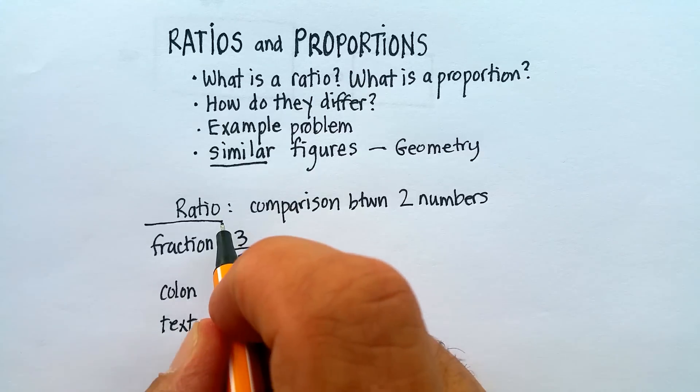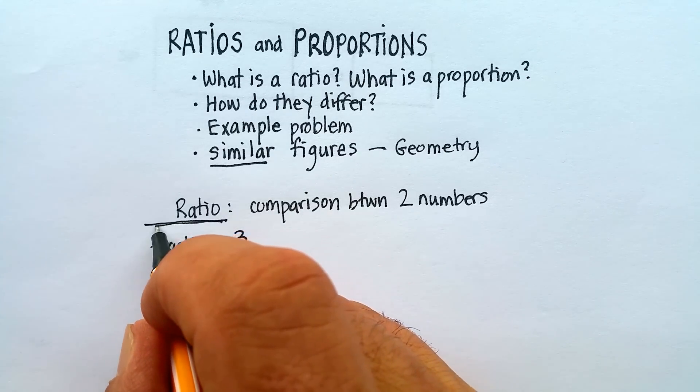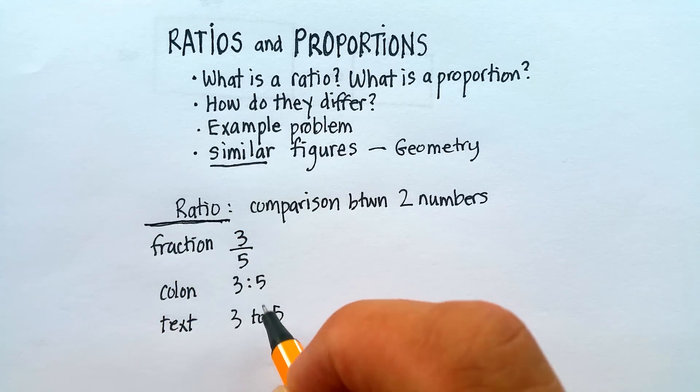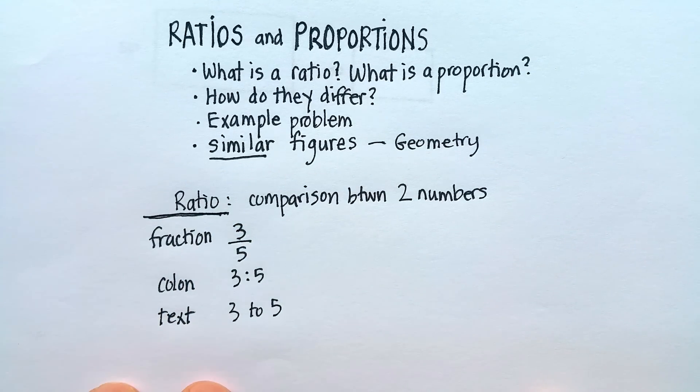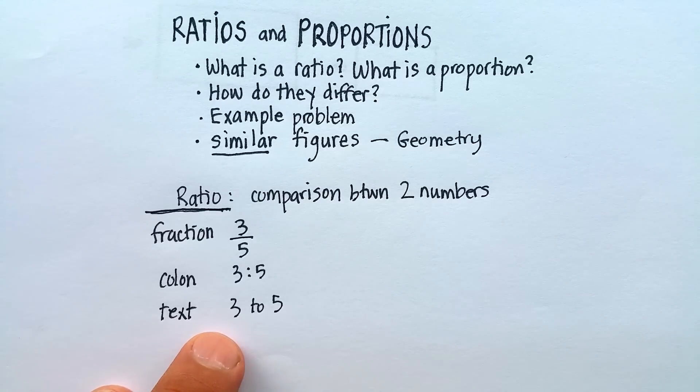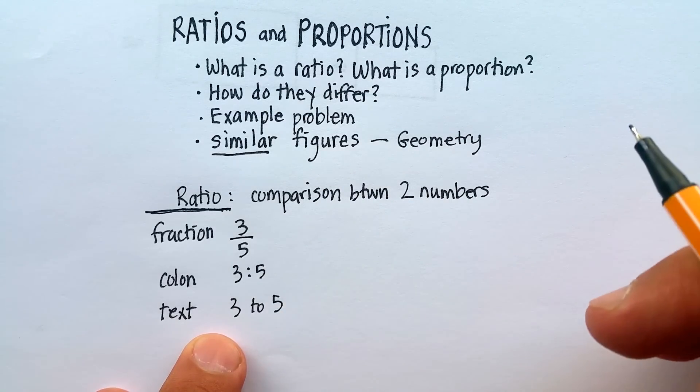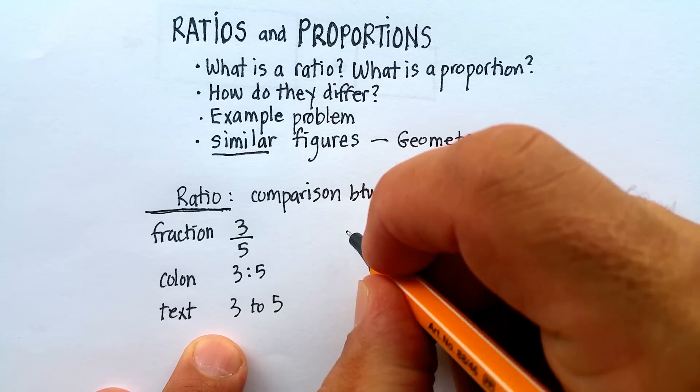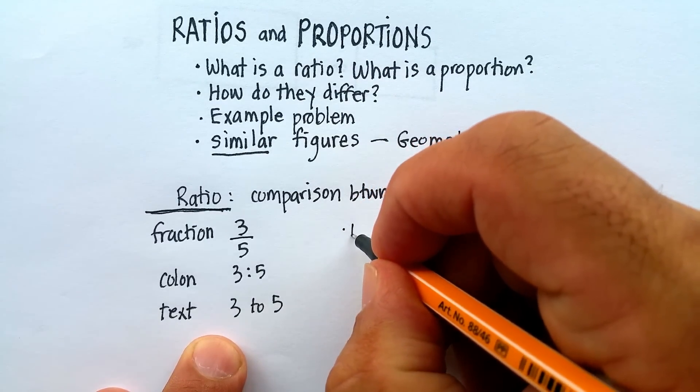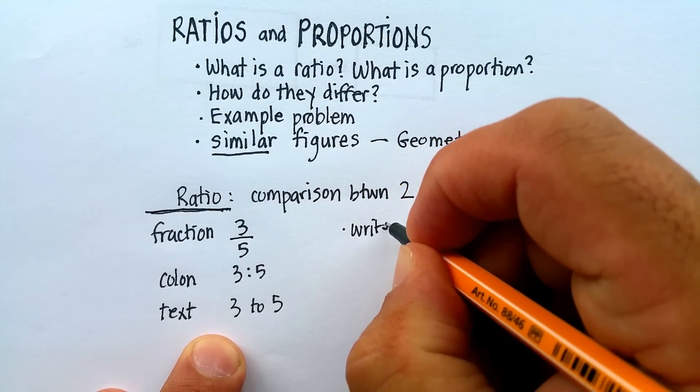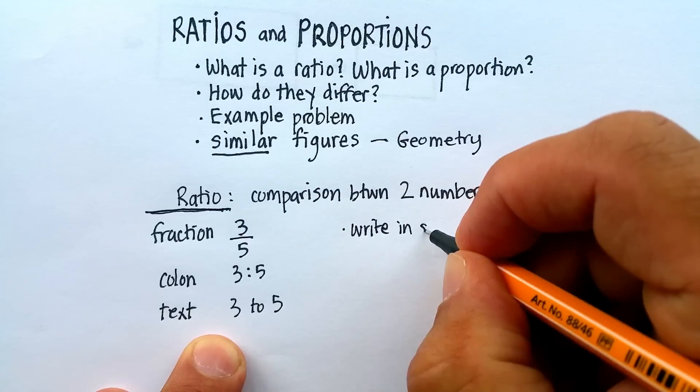Make sure that you understand the difference between the three and that each of these mean exactly the same thing. Now, one thing you should pay attention to when you're writing a ratio is that usually you want to write it in the simplest form.